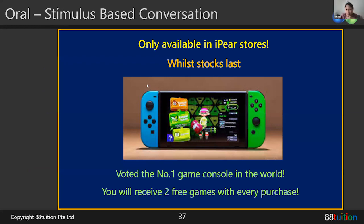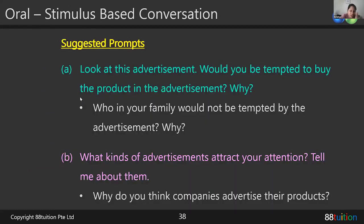Let's move on to our stimulus-based conversation. We have an advertisement — it's the number one game console in the world, only available in iPass stores. You will receive two free games with every purchase. The questions are: Would you be tempted to buy the product in the advertisement, and why? What kinds of advertisements attract your attention? Do you easily get influenced by your friends to get the things that they have? I'll get one or two students to answer these questions.